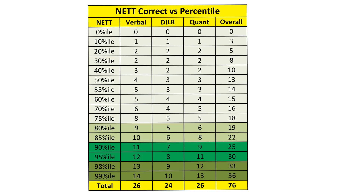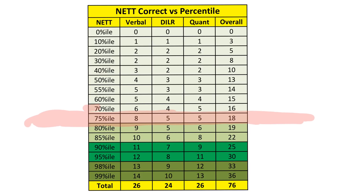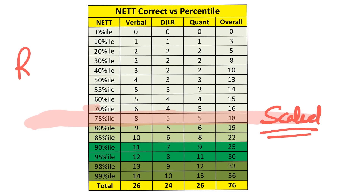If you are from SCST, for the new IIMs you can expect a call even at 70 percentile, but keep a target of at least 75 percentile. These numbers will also act as a benchmark for CAT 2021, because final results will be declared once calls are out in January. Till January we will know the scaled score — it won't be a raw score, there will be a scaled score. This is based on raw score and is my prediction.